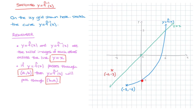Next, moving along the curve, we pick up the y-intercept here. We can see that the curve crosses the y-axis at the point with coordinates 0, negative 5. Consequently, the inverse function will pass through the point with coordinates negative 5, 0 — so that's right here. I'll label that: that's negative 5, 0.